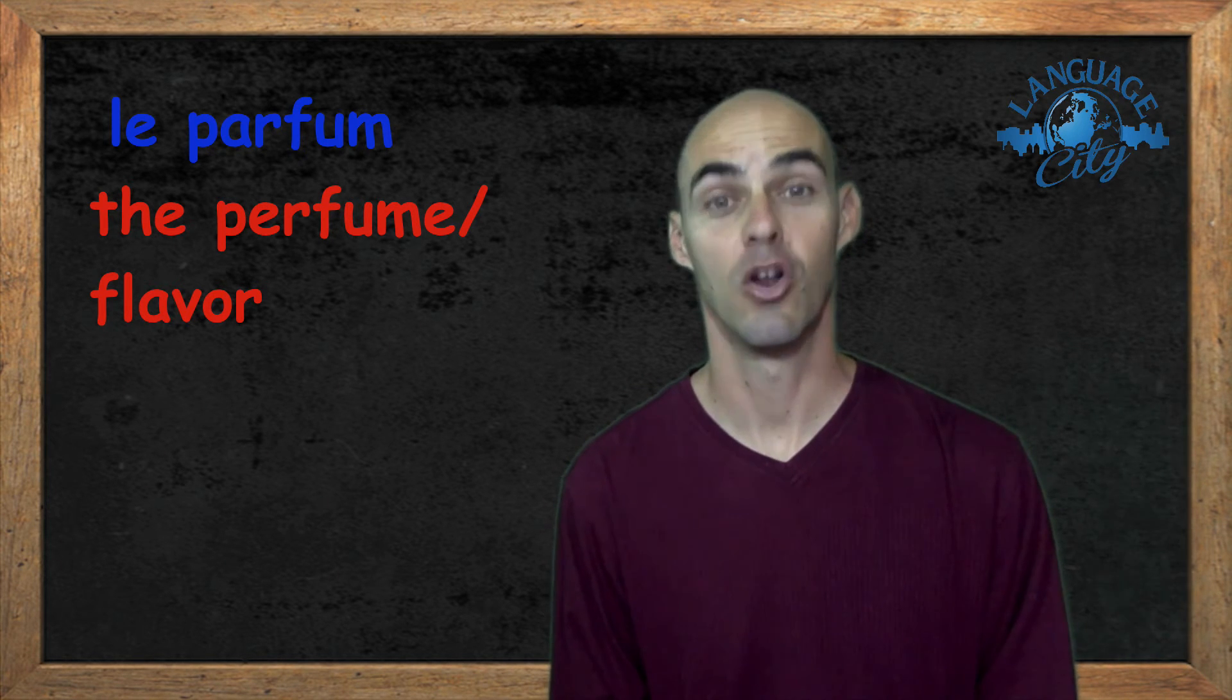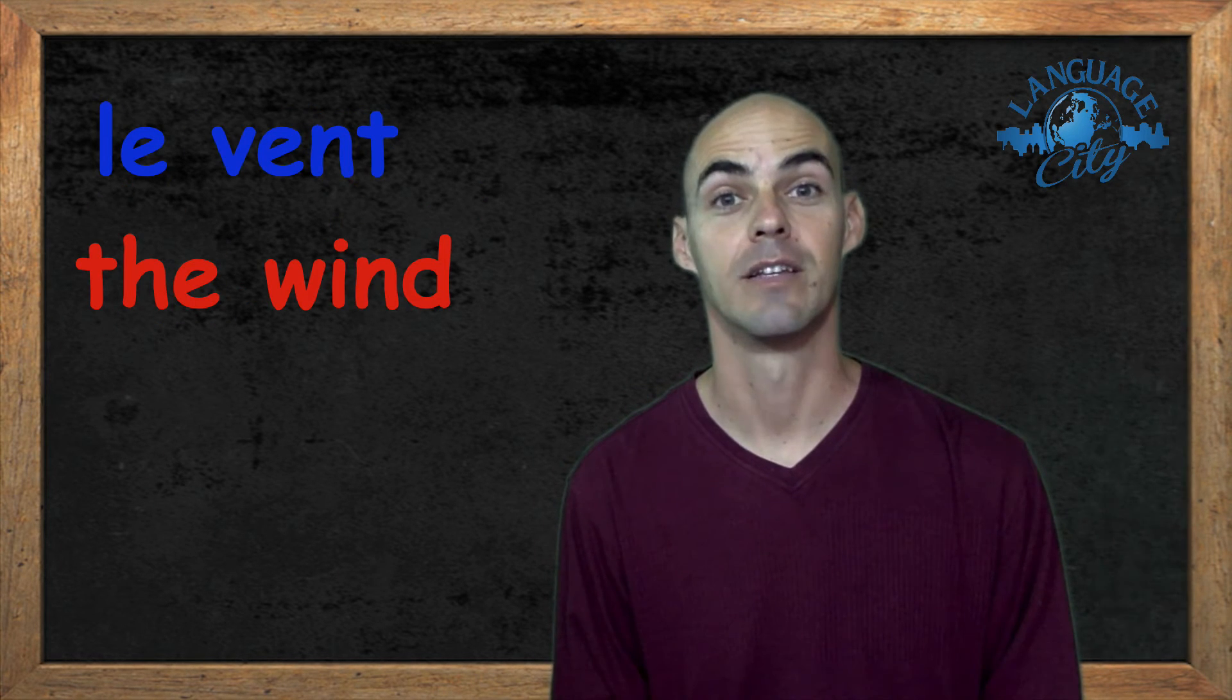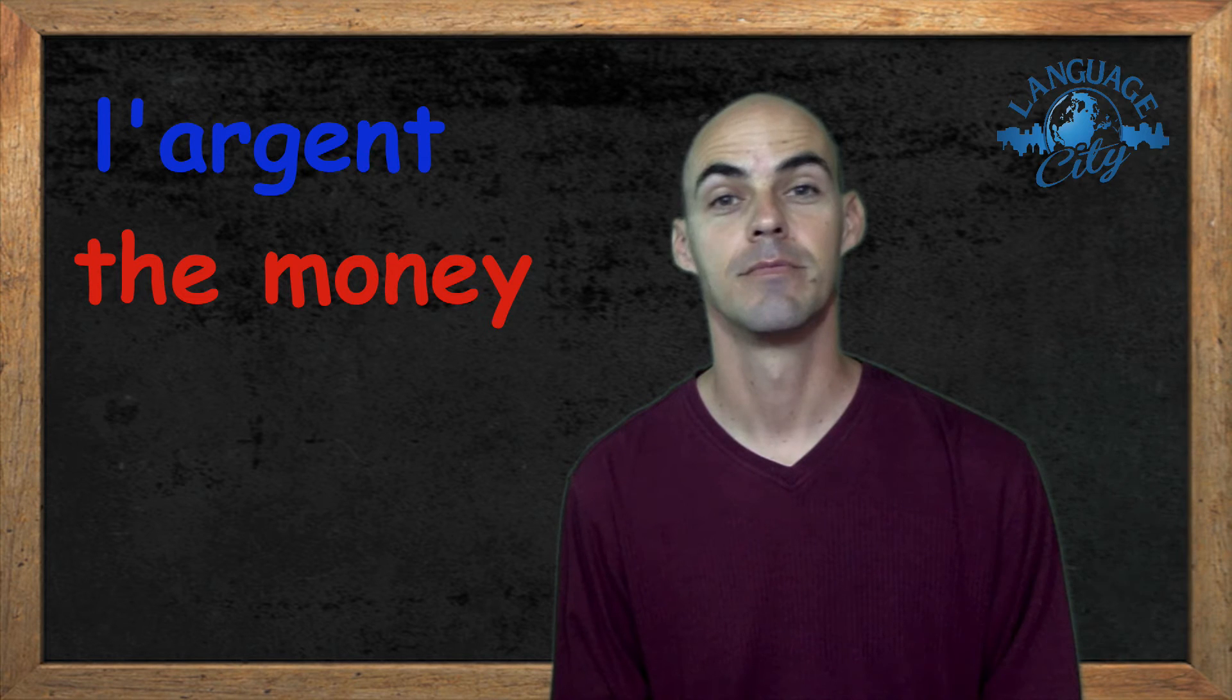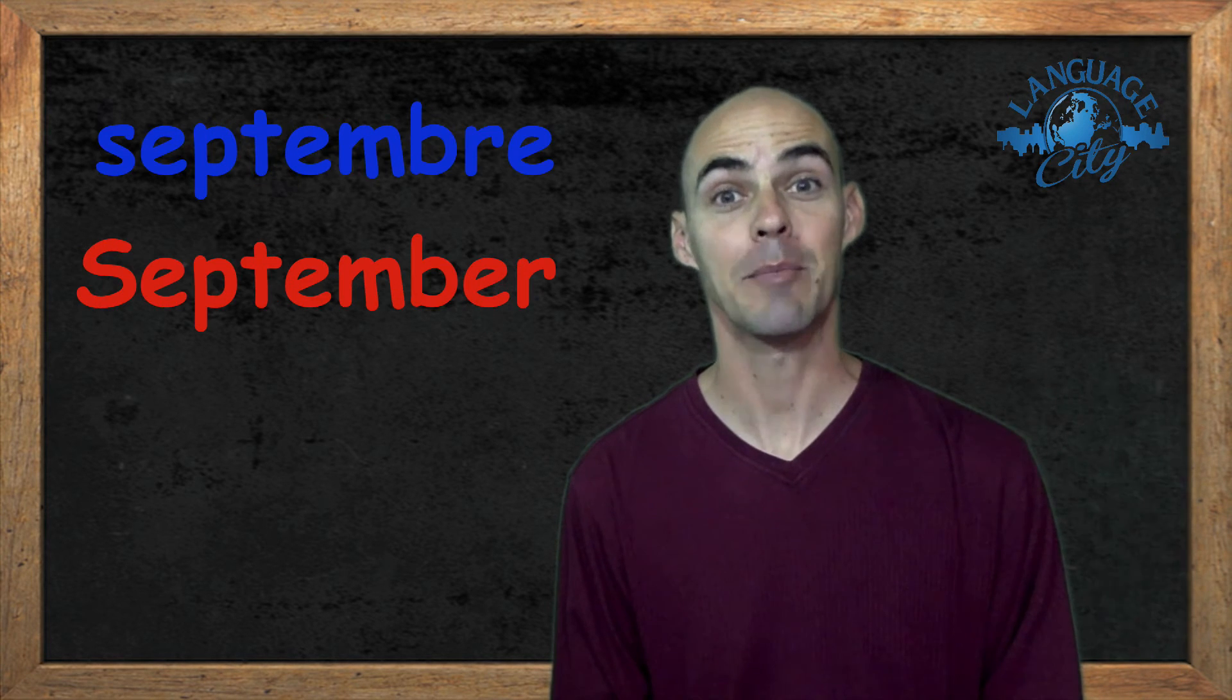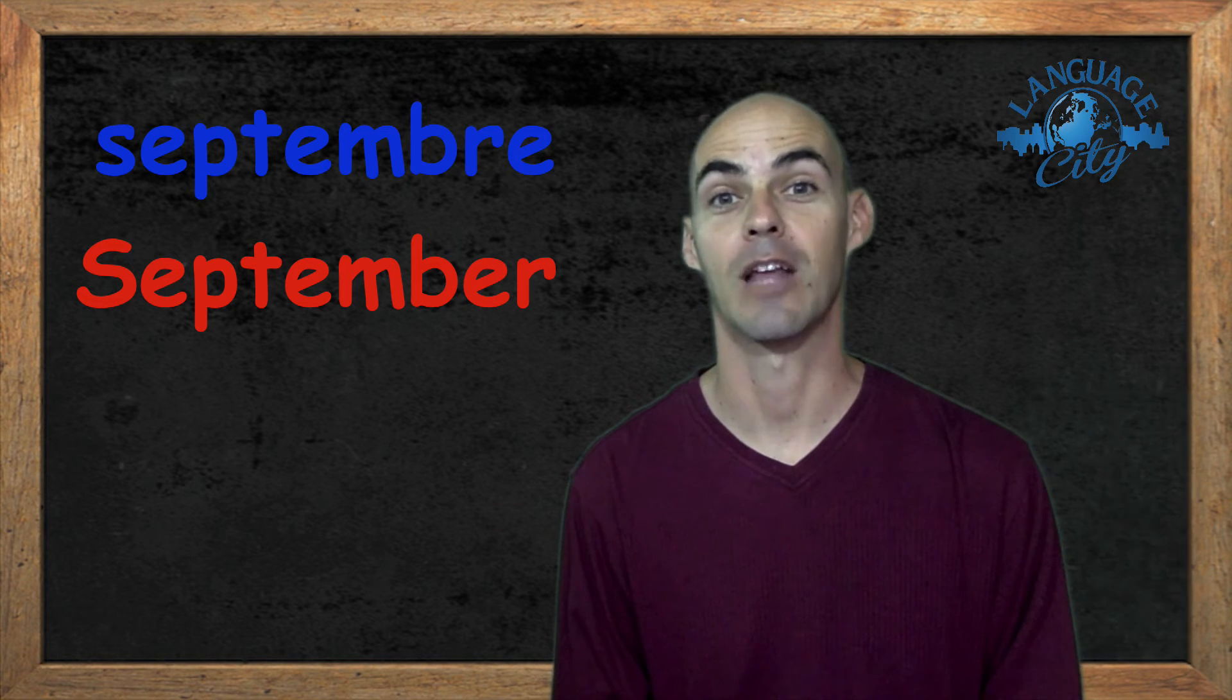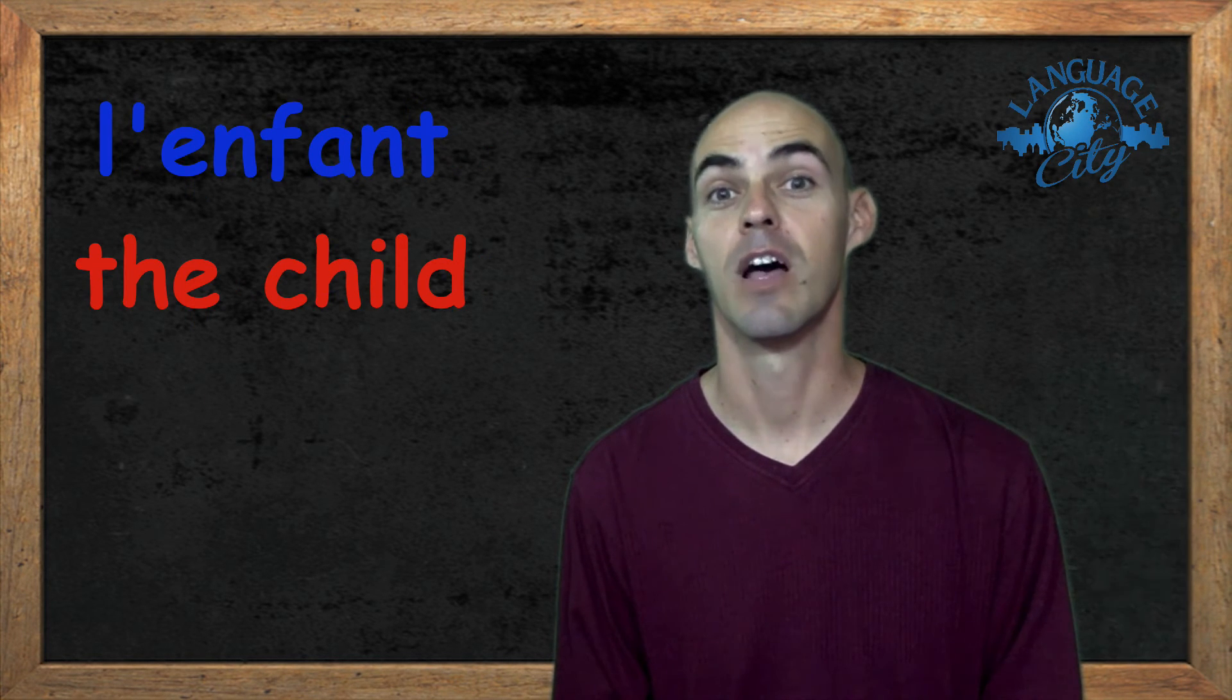Number six was le vent, the wind. Number seven was l'argent, money. Word number eight was septembre, September. Word number nine was l'enfant, the child.